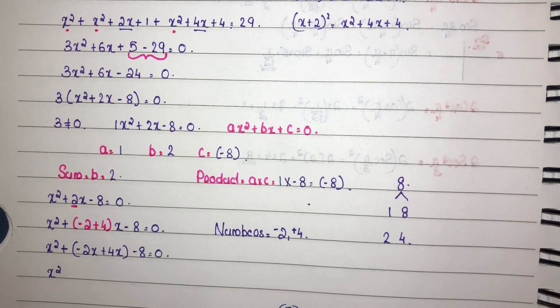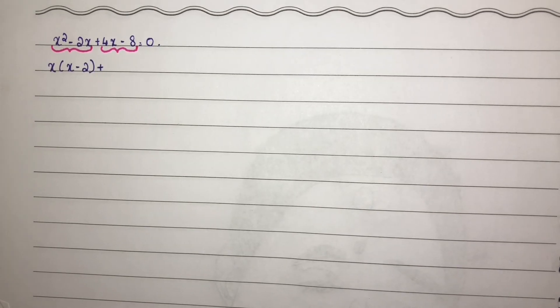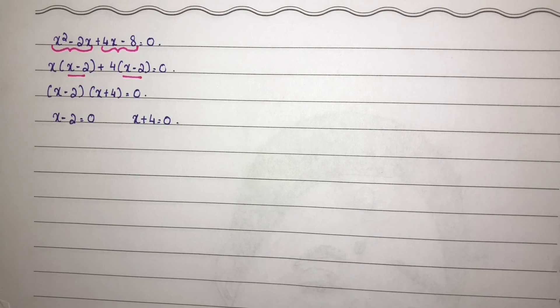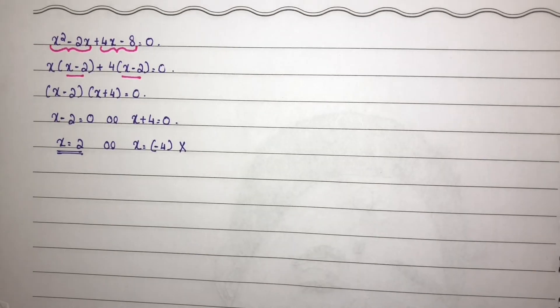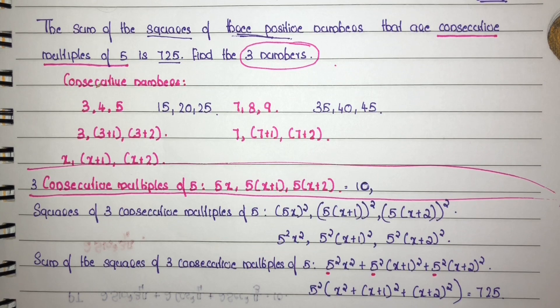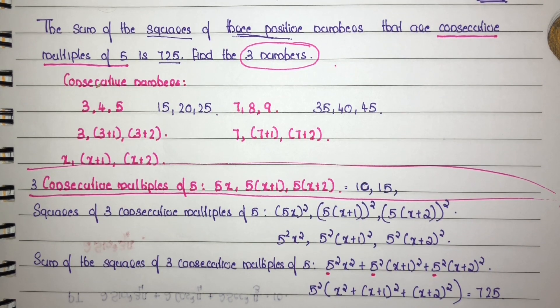Splitting the middle term: x² minus 2x plus 4x minus 8 equals 0. Taking x common from the first pair: x(x minus 2), and 4 common from the second pair: 4(x minus 2). So (x minus 2)(x plus 4) equals 0, giving x equals 2 or x equals minus 4. Since the numbers must be positive, we reject x equals minus 4. So x equals 2. Substituting: 5x equals 10, 5(x plus 1) equals 15, 5(x plus 2) equals 20. The three numbers are 10, 15 and 20.